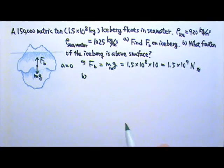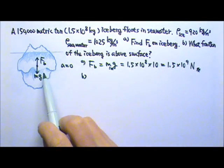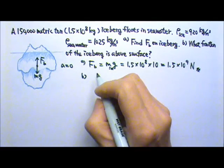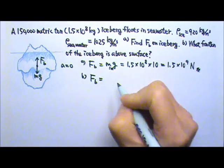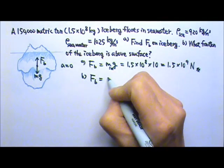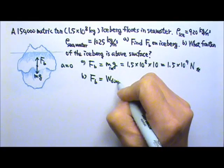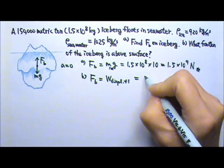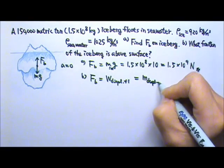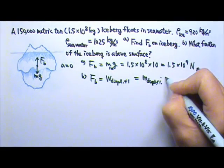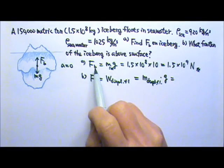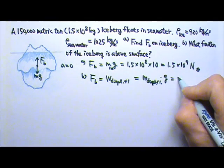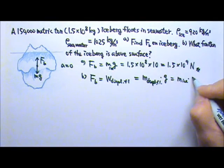For part B, we want to find the fraction of the iceberg above the surface. Now we know the buoyant force, according to Archimedes' principle, is the weight of the displaced fluid. The weight of the displaced fluid is the mass of the displaced fluid times g. The buoyant force is also the weight of the iceberg, which is the mass of the iceberg times g.